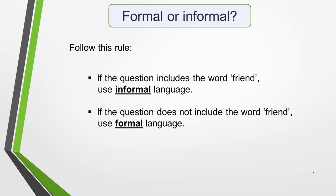Your first task is to decide if the question requires you to write an informal letter or a formal letter. If you get this wrong, you'll get a low score for task achievement. The two types of letter have a very different tone and style, and the language you'll use will vary. It's very simple to tell the difference — follow this rule: if the question includes the word 'friend', use informal language. If the question does not include the word 'friend', use formal language. The only exception is if the letter is to a close family member, when you would also use an informal tone.